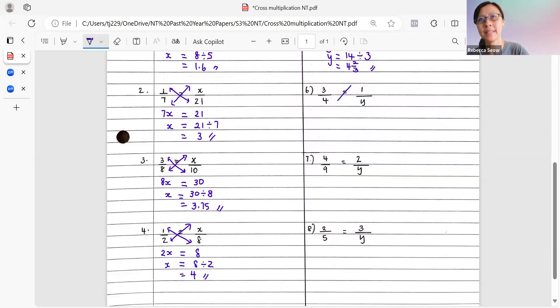Next, again, we draw in the arrows across the diagonals. Let's multiply. 3 times y, 3y, 4 times 1, 4. Therefore, y is equals to 4 divided by 3. And we will end up with 1 and 1 third.